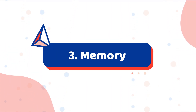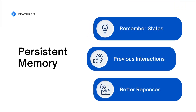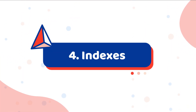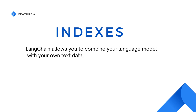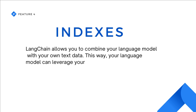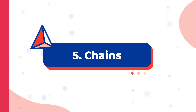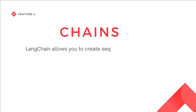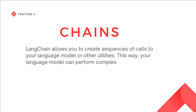LangChain allows you to persist state between calls of your language model, so it can remember previous interactions and context and provide more consistent and coherent responses. LangChain also allows you to combine your language model with your own text data, so it can leverage your domain-specific knowledge and provide more accurate and relevant responses. Additionally, LangChain allows you to create sequences of calls to your language model or other utilities, enabling complex tasks that require multiple steps and logic.